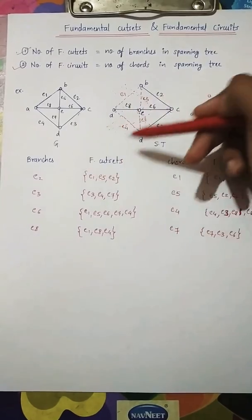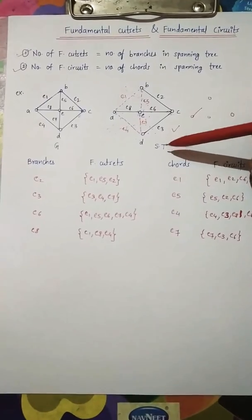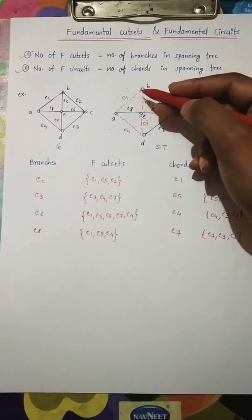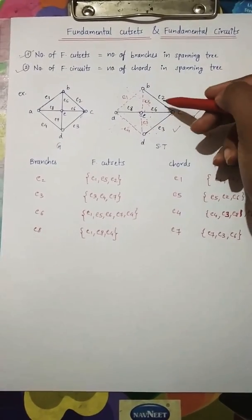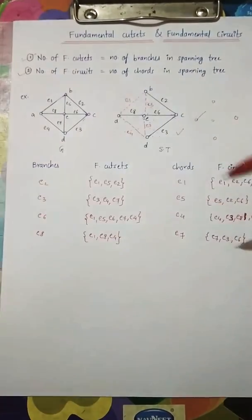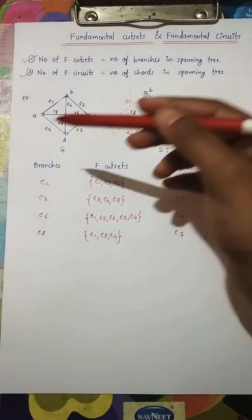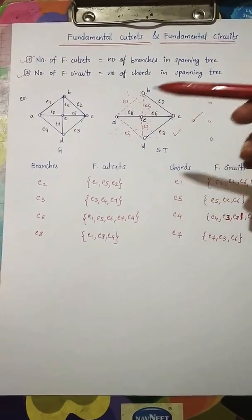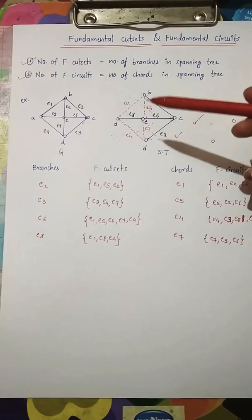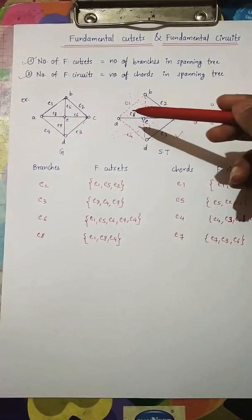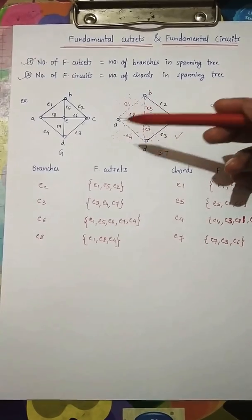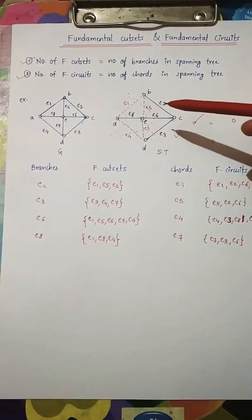From the given graph we draft out the spanning tree. This is our spanning tree with branches e2, e3, e6, and e8. Branches are those edges which are present in the spanning tree, so the branches here are e2, e3, e8, and e6. Chords are those edges which are not present in the spanning tree.